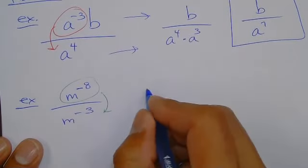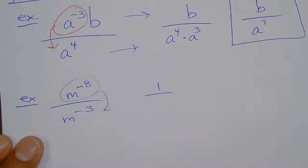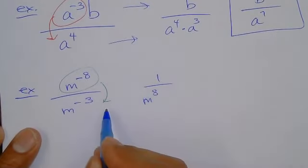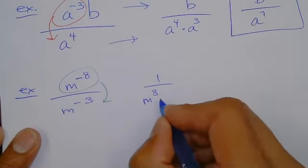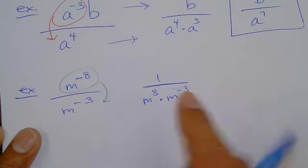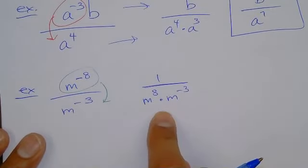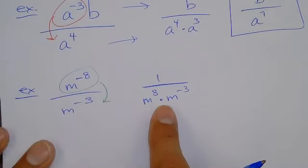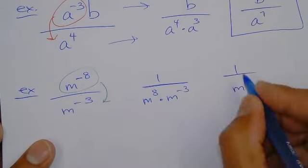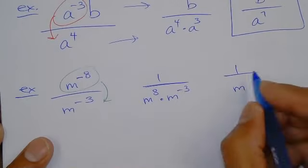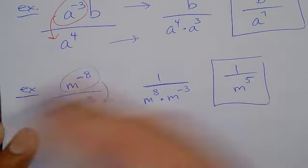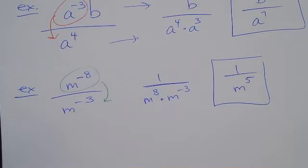So when you move the negative 8 down, you're left with just the one on the numerator. You have m positive 8 — because when you move it down it changes sign — times m negative 3, which is product rule. When those add, you get a positive exponent. We never want to leave an answer with a negative exponent.